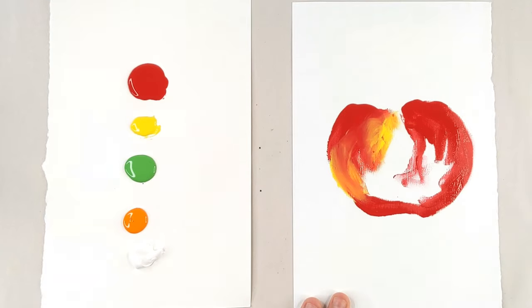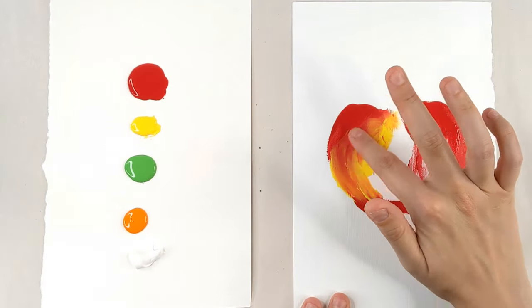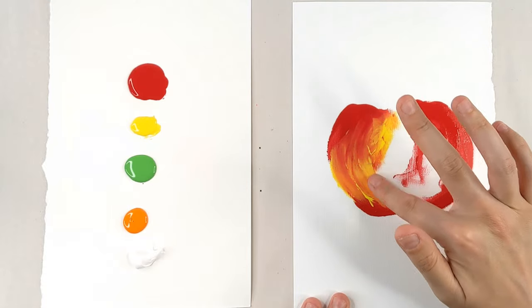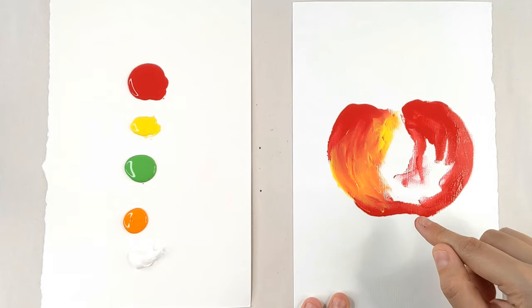So I'm just going to blend a little bit of yellow into our apple. I'm making sure that I use round motions, round strokes, so that it goes along with the shape of the apple.